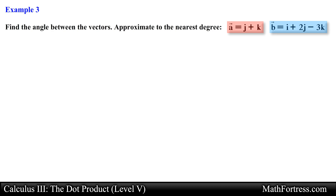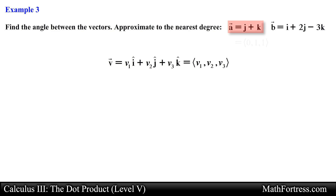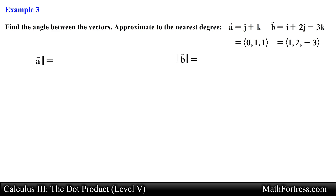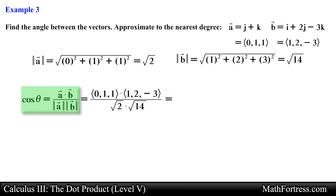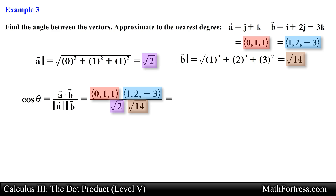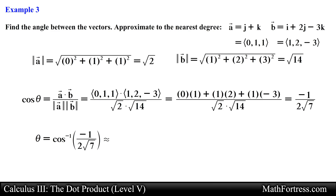Here we have two vectors in space written in standard unit vector form. Recall that each unit vector is associated with a particular component, so we can rewrite vector A in component form. We can also do the same for vector B. Next let's compute the magnitude of both vectors. Then we make use of the rearranged geometric definition of the dot product and substitute the various values on the right side. Evaluating the dot product and multiplying the magnitudes we obtain the value for cosine of theta. Finally we take inverse cosine of both sides and approximate to the nearest degree, obtaining 101 degrees as the final answer.